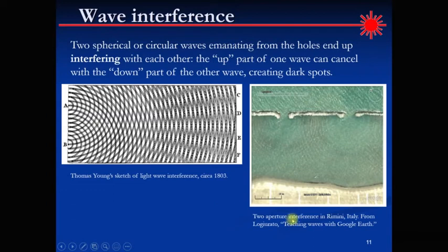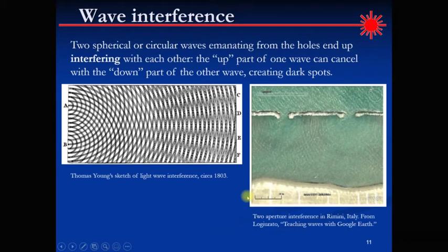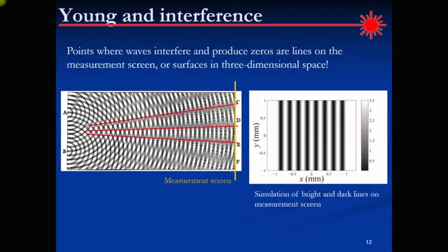You can also see this interference phenomenon in water waves — in fact, you can see it in Google Earth. Researchers showed you can teach wave optics by just looking at water waves through satellite imagery. Here's an example of two apertures in a seawall producing these circular waves. Young was the first to demonstrate that you can see these bright and dark lines on a measurement screen, which arise due to the interference of waves from two pinholes.